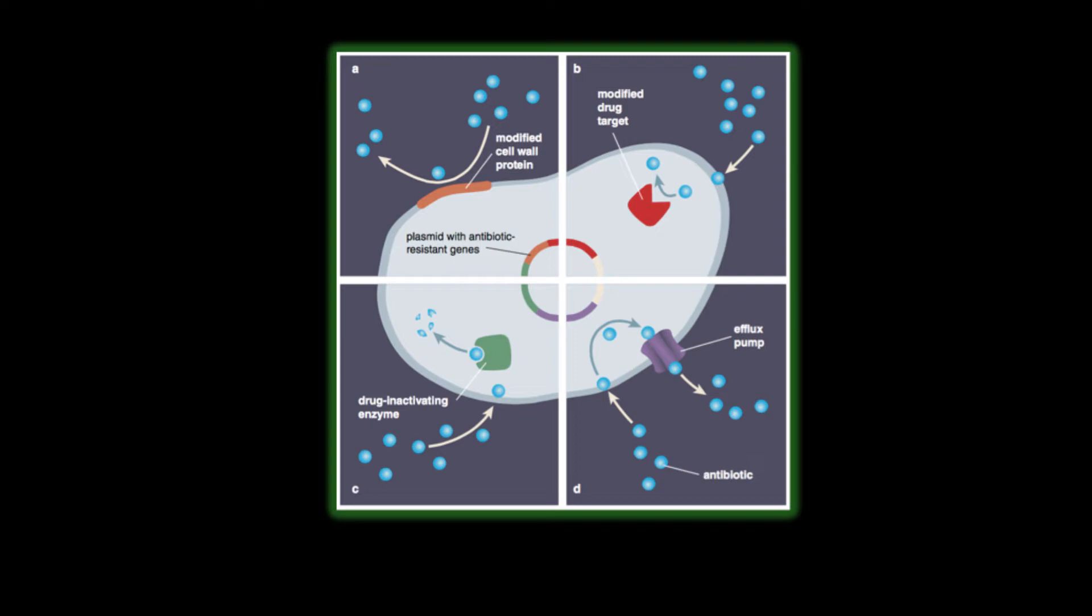Another way that bacteria can acquire resistance is through acquisition of genes via conjugation, transformation, or transduction. Once bacteria have acquired resistance,